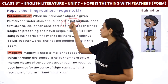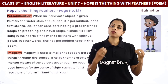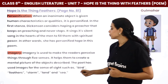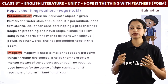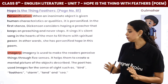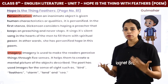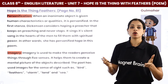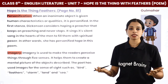The next literary device is imagery. Imagery is when poets use certain words so that you can visualize, feel, or sense things through the five senses — sight, sound, touch, smell, and taste. Imagery is used to make readers perceive things through the five senses and helps create a mental picture of the objects described. The poet has used images for the senses of sight such as bird, feathers, storm, land, and sea. You can imagine a storm, a land, or hope as a bird with feathers — all these things fall under imagery.